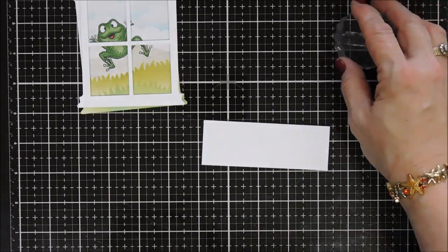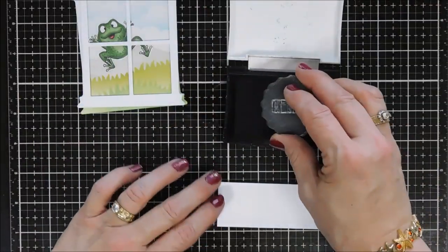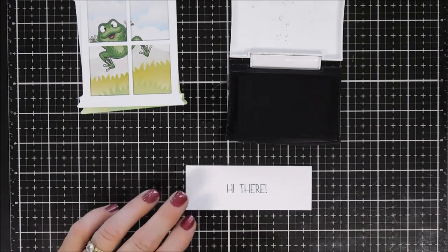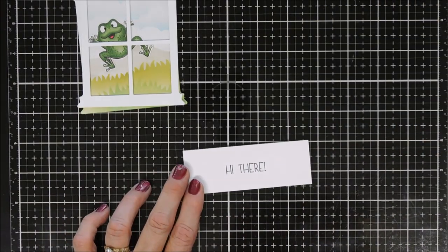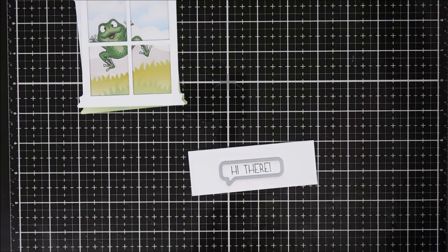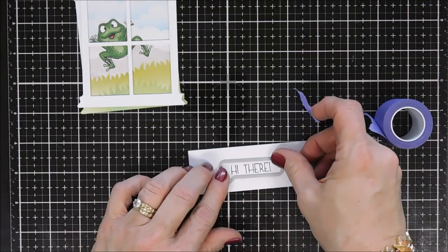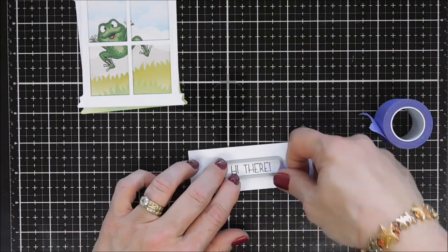Okay for my sentiment I chose the one in the stamp set that says hi there. I'm stamping it with my Versafine ink and then I thought it'd be cute if we had a little thought bubble or a word bubble and I'll just tape that down and run that through my die cut machine.